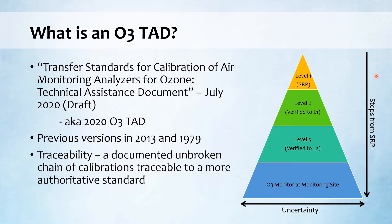With each step away from the SRP, you increase your measurement uncertainty. So the 2020 Ozone TAD essentially describes what's allowed when it comes to ozone traceability for regulatory air monitoring stations.